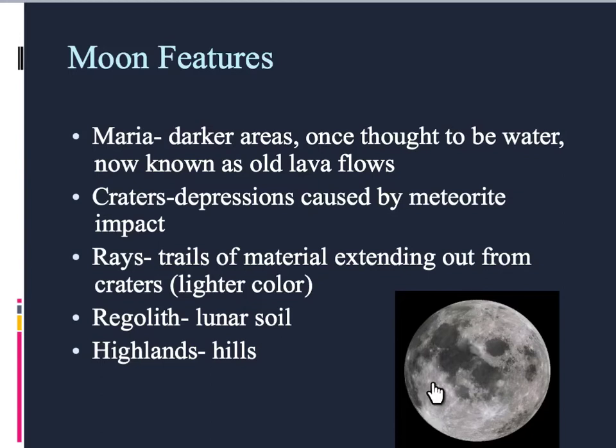And then there's also these little features called rays, or trails of material extending out from a crater, and they're lighter in color. We refer to the moon soil or lunar soil as regolith. And then if there's any kind of hills, we call them highlands.